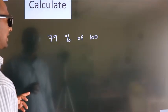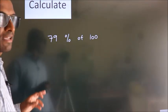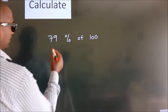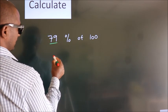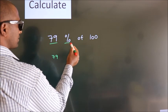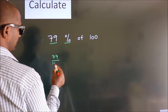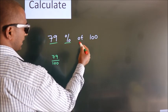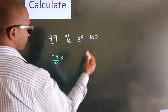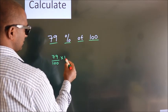Calculate 79% of 100. How do we calculate this? This number as it is, we write it down. In place of this percentage, we divide by 100. In place of 'of', we write 'into' (multiply). This number as it is, we write.